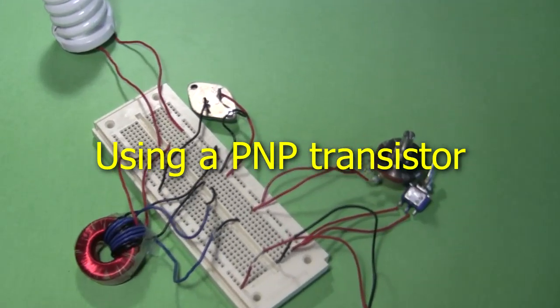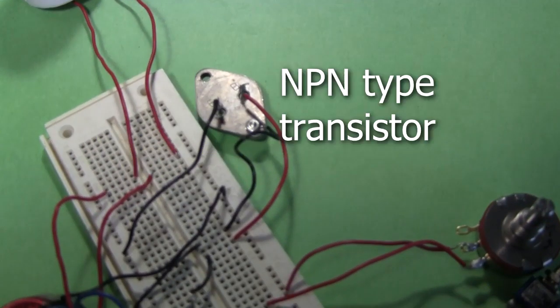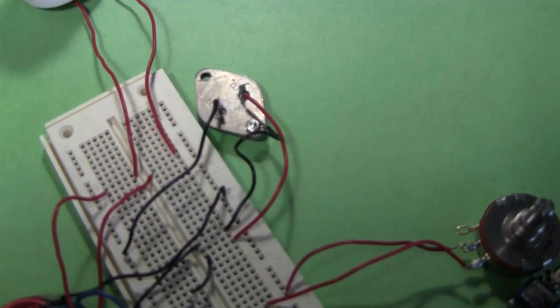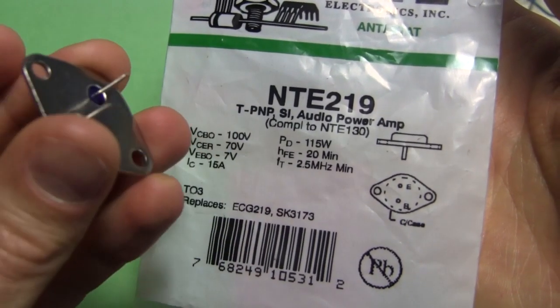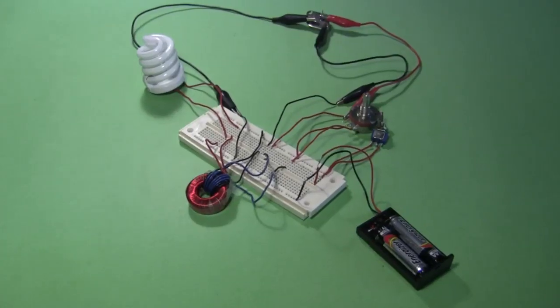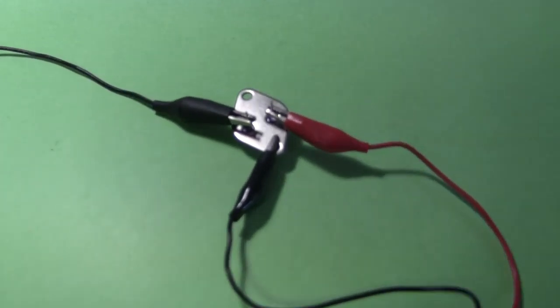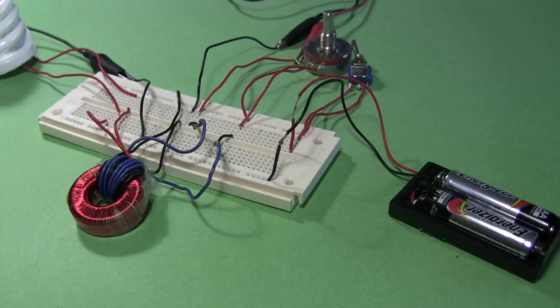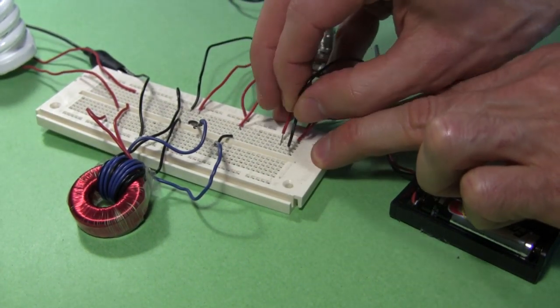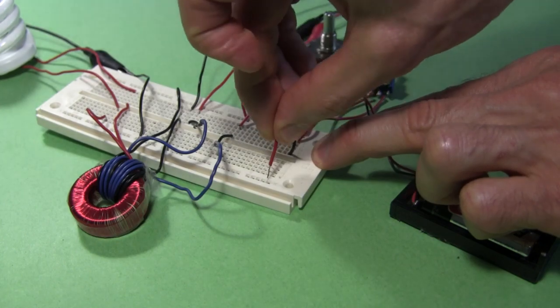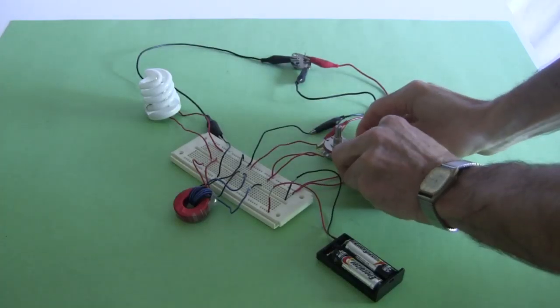I was asked if a PNP type transistor could be used instead of this NPN type transistor. From searching the web, I knew it could with some modifications. So here's an NTE-219 PNP transistor. I put it in the circuit with the emitter, collector, and base going to the same places as the NPN transistor was, but to make it work, you just have to reverse the batteries, switching the positives and negatives. And here it is in action.